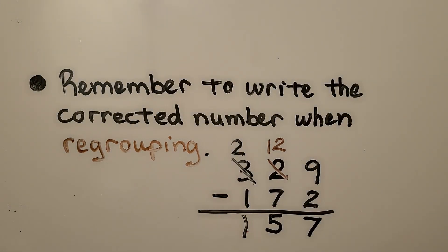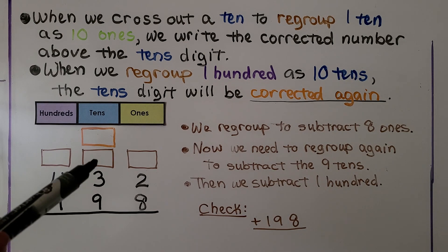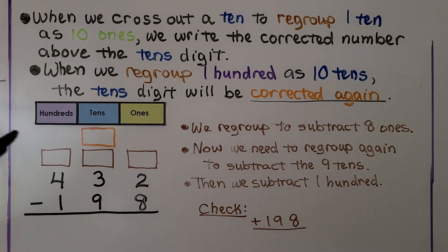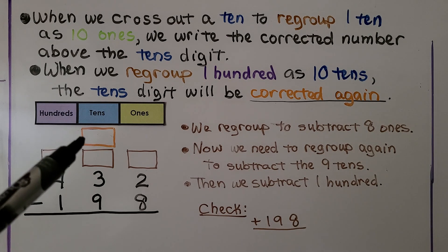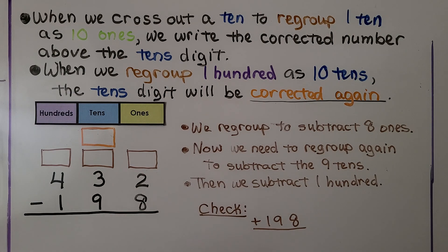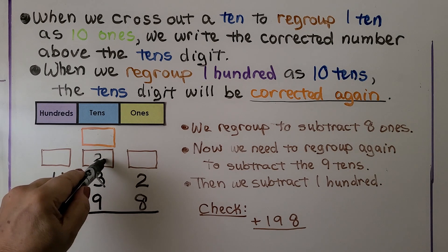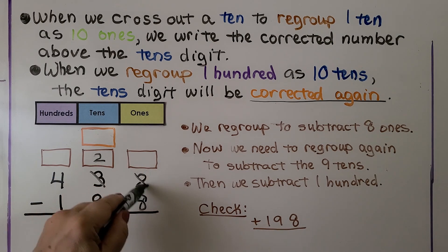Be very careful — make sure you remember to cross out and write the corrected number. When we cross out a ten to regroup one ten as ten ones, we write the corrected number above the tens digit. When we regroup one hundred as ten tens, the tens digit will be corrected again. So the first thing we do is look at the ones place. We have two ones and we need to take eight ones away, but we don't have enough. So we are going to cross off the three tens — it's going to become two tens. Now, instead of two ones, we have twelve ones.